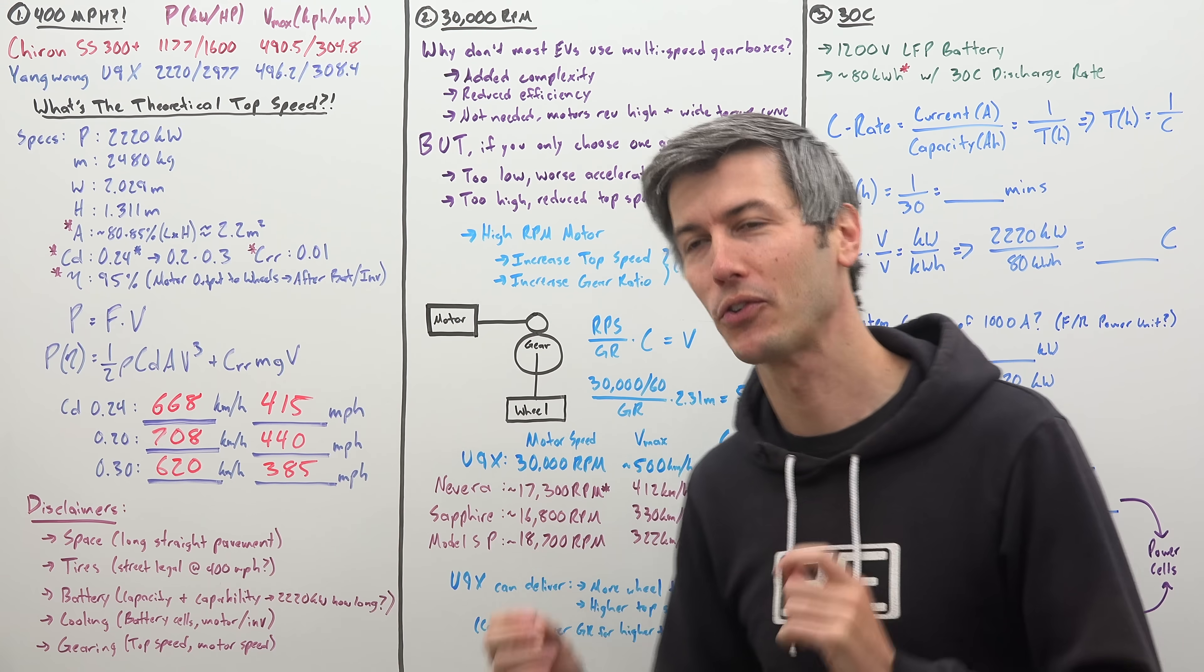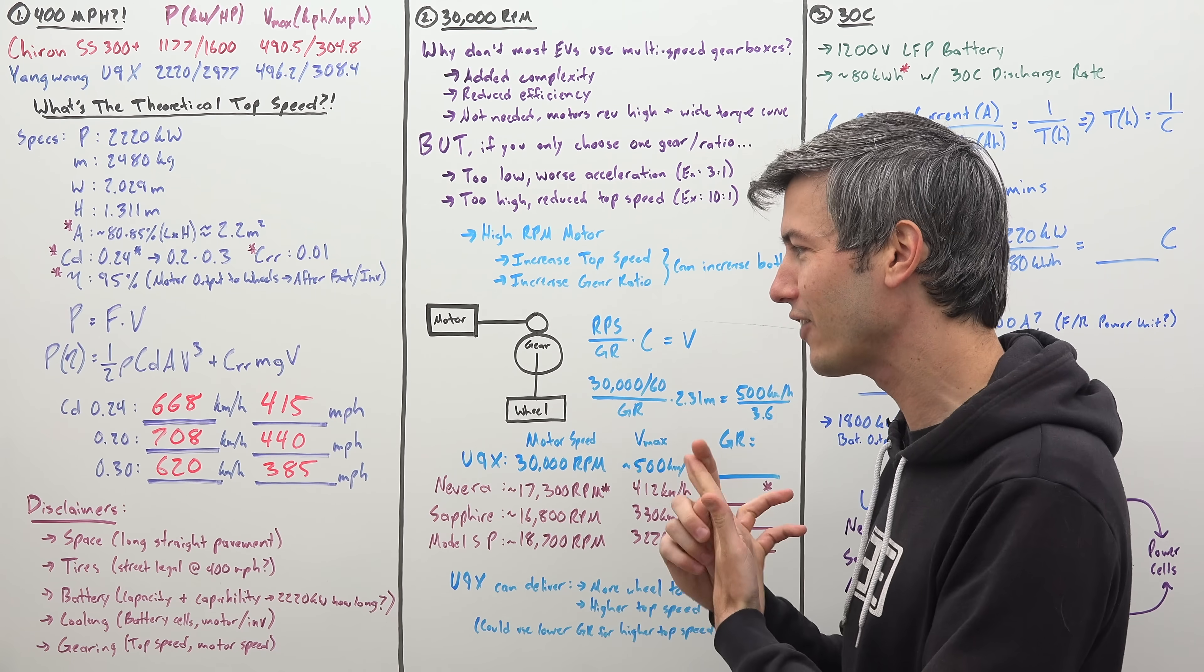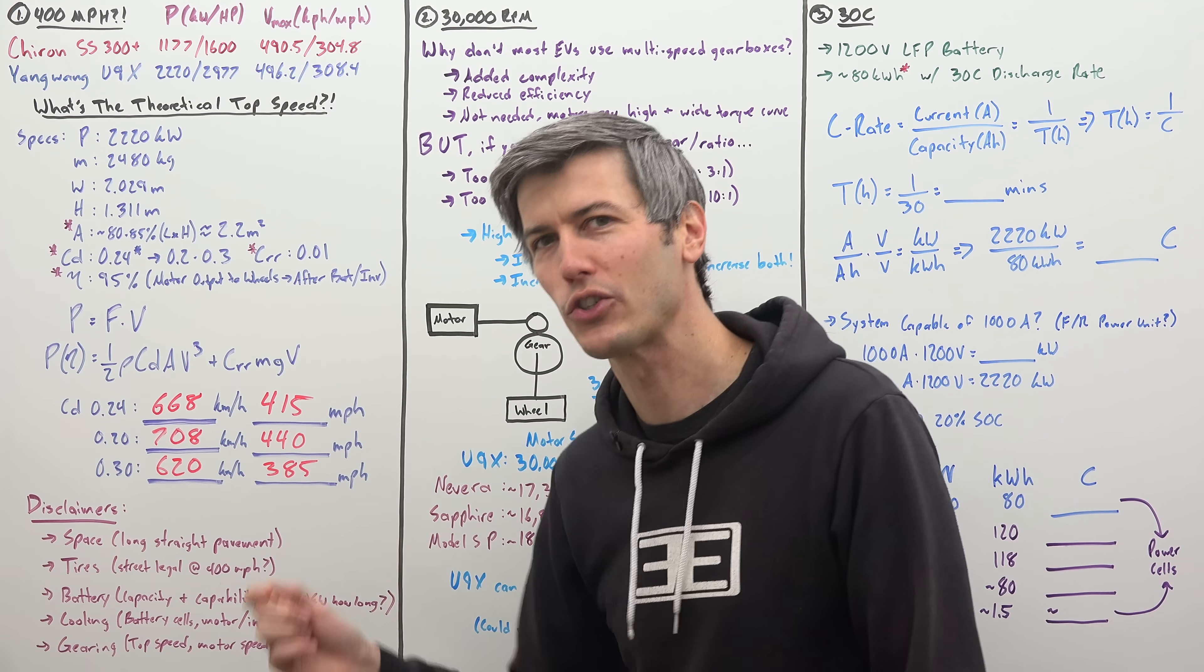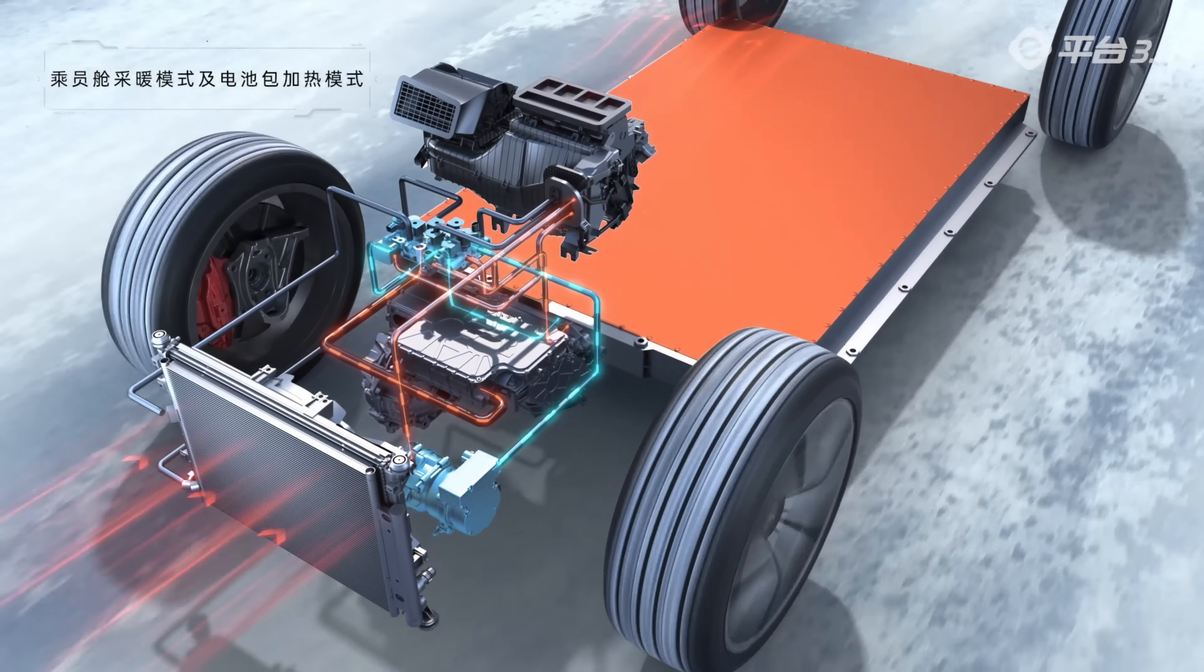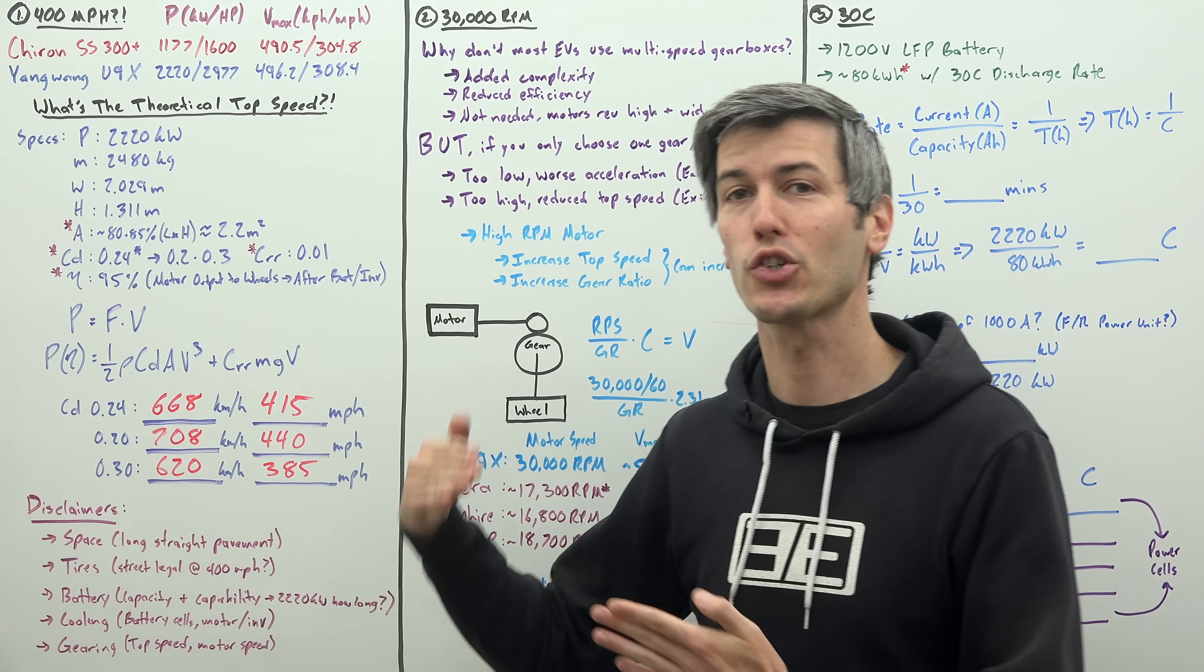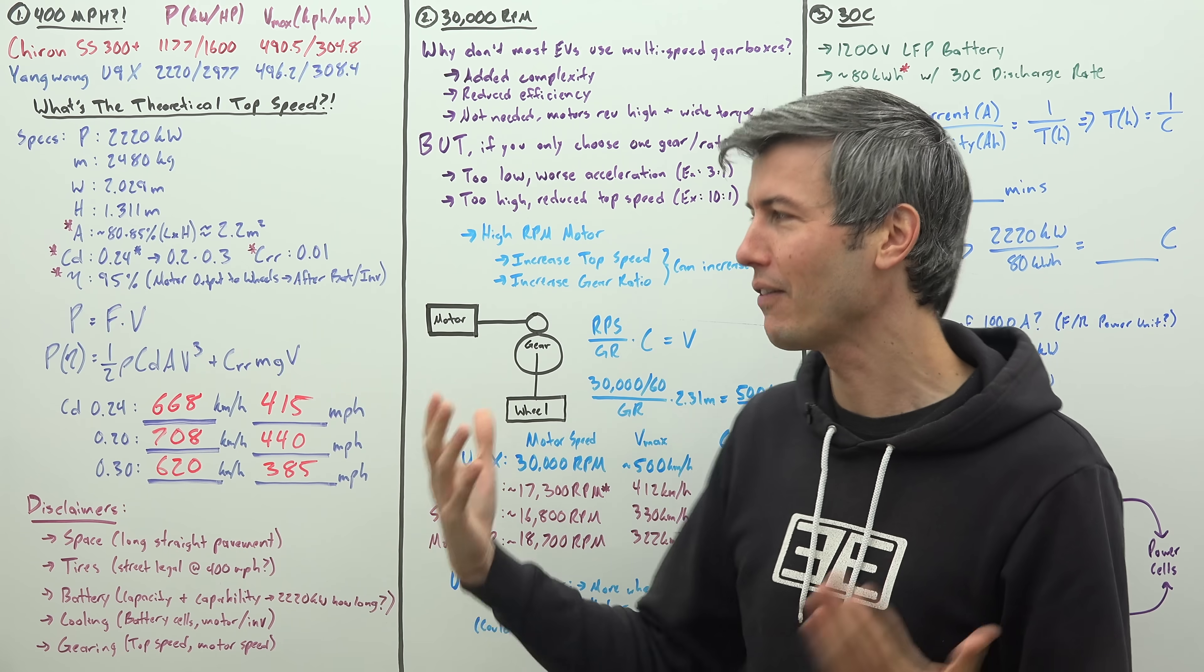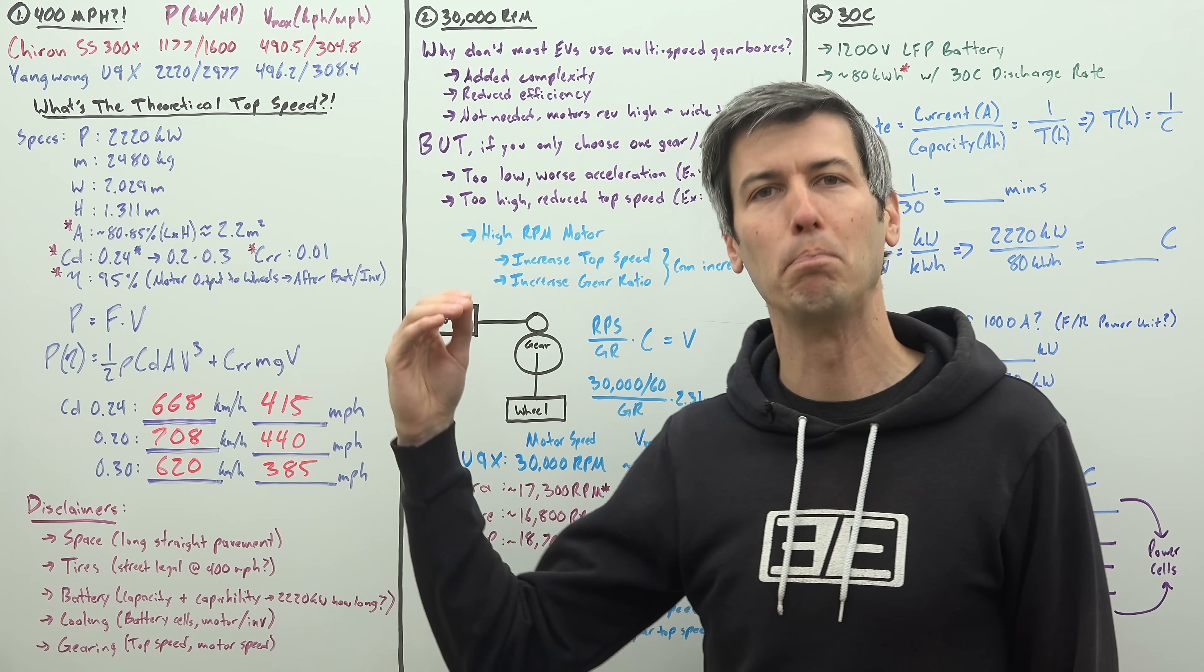Now, there are a bunch of disclaimers that of course go along with this. First of all, you need the space to do it. You need an insanely long straightaway of paved road that you can test this out. Second, you're going to need some really good tires, some tires that are street legal and somehow can handle 400 miles per hour. The battery, of course, it needs to have the capacity to do this, and the capability. How long can it actually deliver 2,220 kilowatts as output from the motor? That I do not know. You need sufficient cooling, not only for the battery, but for the motors and inverters. And of course, you need the gearing to be able to reach that top speed, which also leans into the question, does that electric motor actually have that peak output at the very top end of its theoretical top speed? So if it's spinning at 30,000 RPM, can it still deliver that peak output at that motor speed? So a bunch of things that you have to take into consideration, but if it actually can put 2,220 kilowatts as output from the motors, yeah, the theoretical top speed is bonkers.